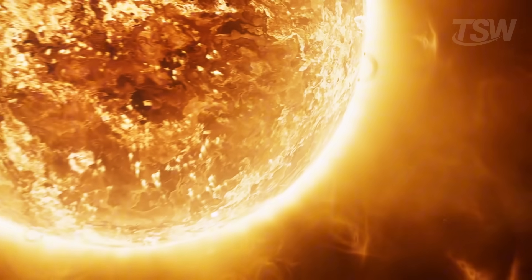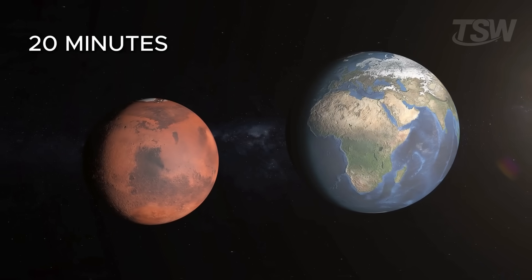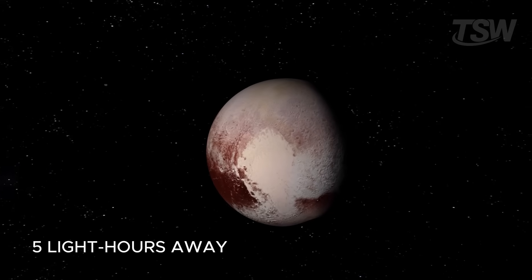If something catastrophic happened on the sun, we'd only know minutes later. And Mars, our favorite neighbor, can be up to 20 light minutes away depending on its orbital position. Pluto? That one's over five light hours away.